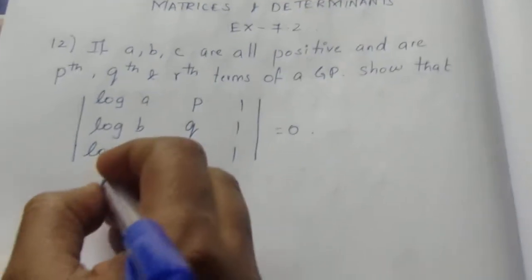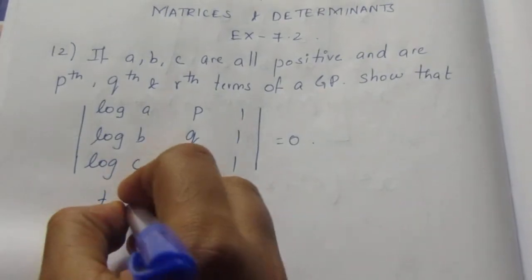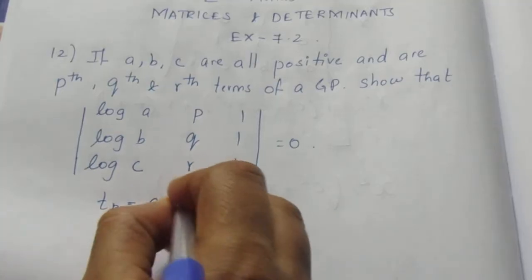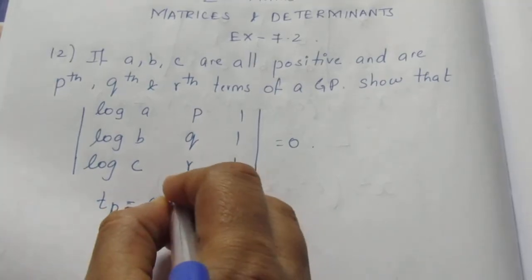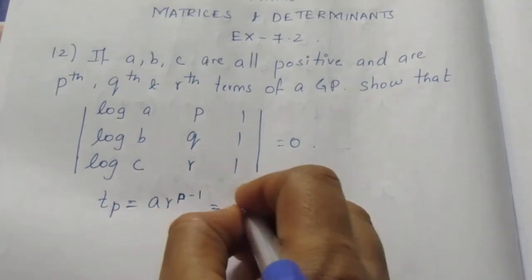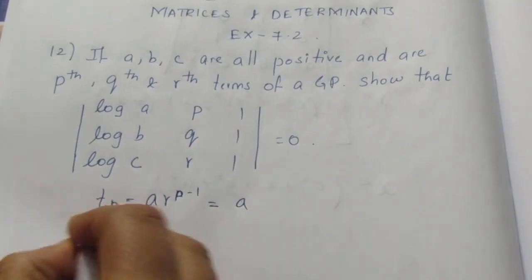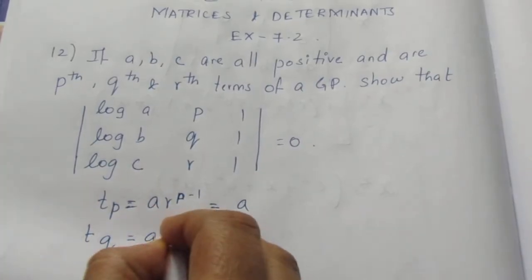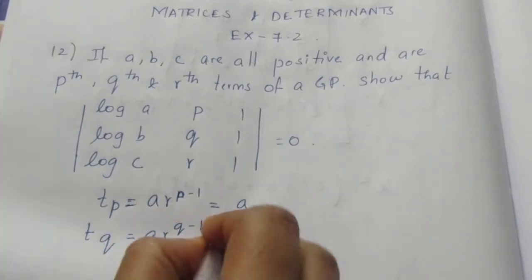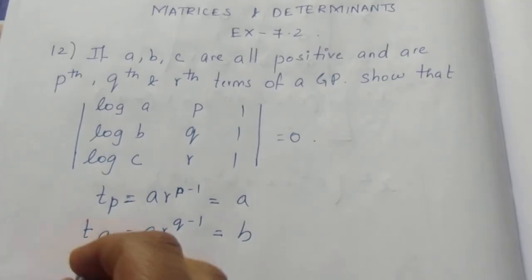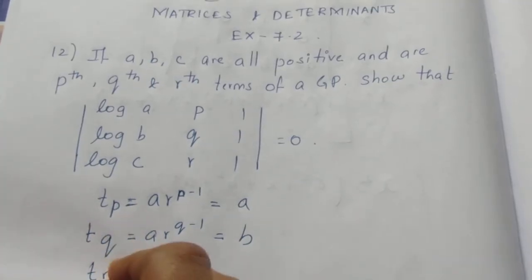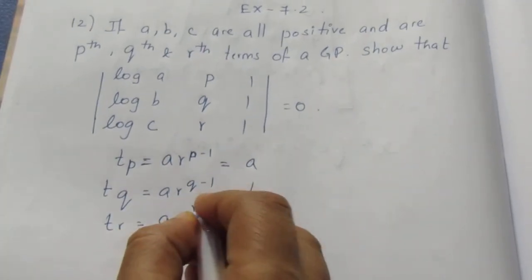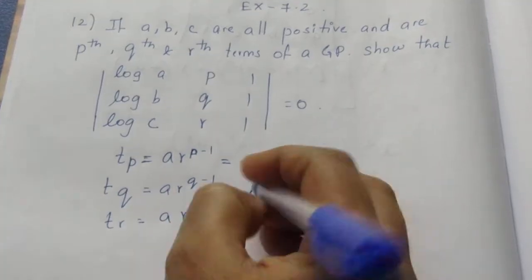The Pth term of a GP is a·r^(P−1) = A. The Qth term T_Q = a·r^(Q−1) = B. The Rth term T_R = a·r^(R−1) = C.